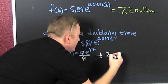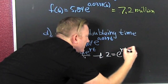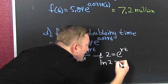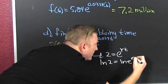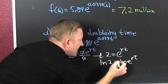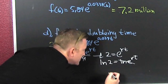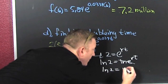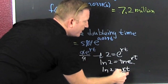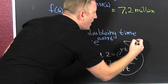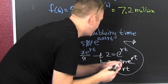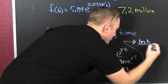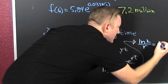So then we're looking at 2 is equal to e to the rt. Then we naturally log it. That's the natural log of 2 equals the natural log of e to the rt, which simplifies to rt. So then these cancel and we have the natural log of 2 equal to rt. We're looking for the doubling time, so we divide by r. So we have t equals the natural log of 2 divided by the growth rate.